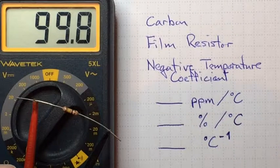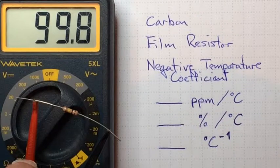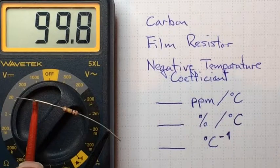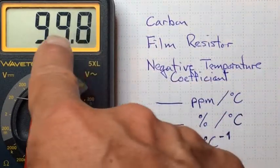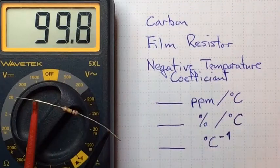And right now this one, it's measuring on the 200k, 200,000 ohm scale, and it's reading 99.8. This is a 100k resistor, and it's not quite exactly 100k, but pretty close.